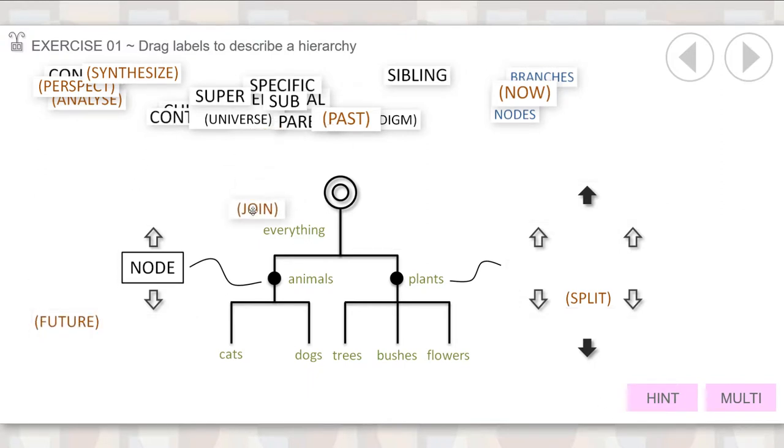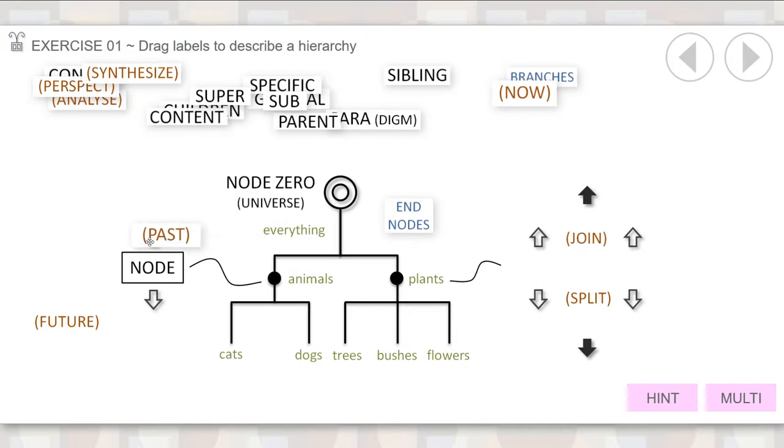Let's see, what else have we got? Joining. So if we split things, this is probably joining there. We've got end nodes somewhere in there. I think I can't remember. Node zero is there. The past, if that was up there, if that's the future, this is the past.